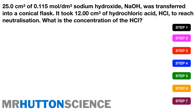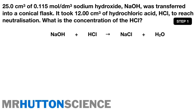Here's a question: 25 cm³ of 0.115 mol/dm³ sodium hydroxide was transferred into a conical flask. It took 12 cm³ of hydrochloric acid to reach neutralisation. What is the concentration of the hydrochloric acid? Step 1 — the equation: NaOH + HCl → NaCl + H₂O. Step 2 — this equation is already balanced, so we move straight to step 3: write down volume, concentration, and moles.